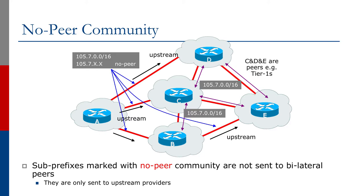The upstream operators that peer with each other — C, D, and E in the diagram — are all peers; for example, they might be tier ones. All they want to see and all they need to see are the actual aggregates. They don't need to see the sub-prefixes. The sub-prefixes have been sent with the no-peer community attached, so the border routers of those upstream providers will not send those subnets tagged with no-peer.